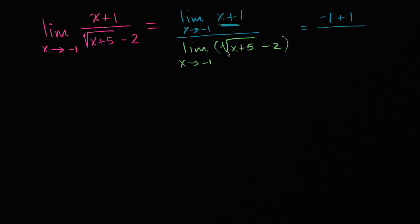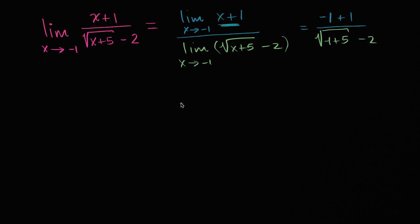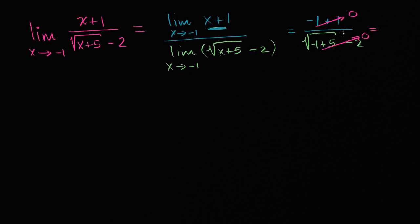So the numerator is going to evaluate to negative one plus one. The denominator, square root of x plus five minus two, isn't continuous everywhere, but it is continuous at x equals negative one, so we substitute negative one for x: the square root of negative one plus five minus two. In the numerator we get zero; in the denominator, negative one plus five is four, the principal root is two, minus two gives zero again. So we get zero over zero.